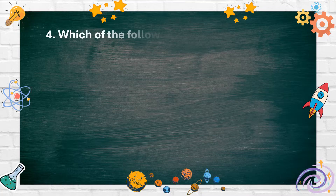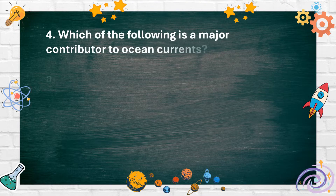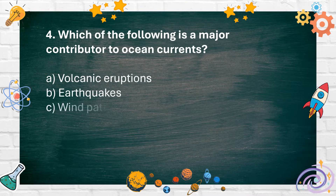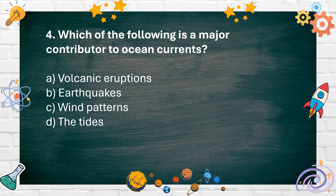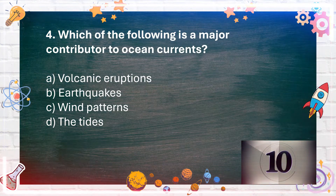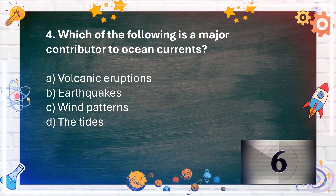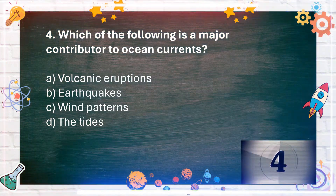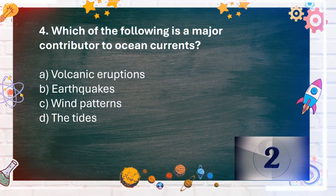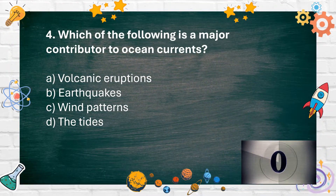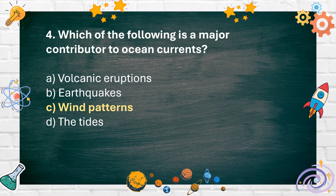Number 4. Which of the following is a major contributor to ocean currents? A. Volcanic eruptions. B. Earthquakes. C. Wind patterns. D. The tides. The answer is C. Wind patterns.